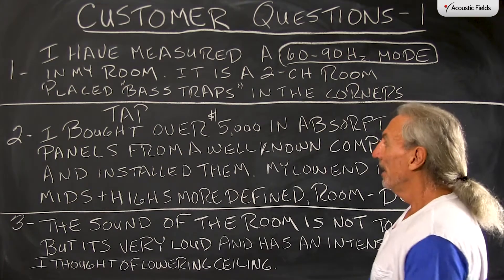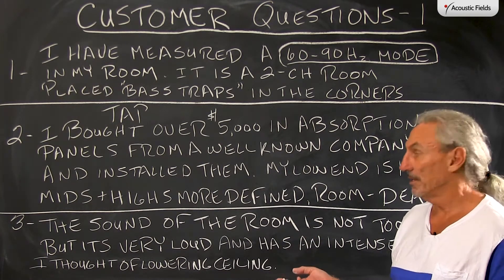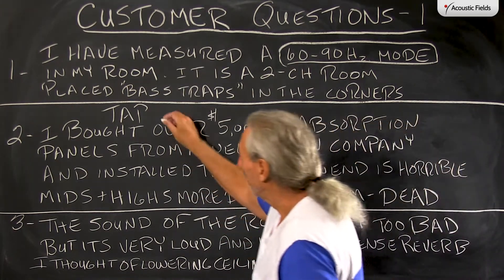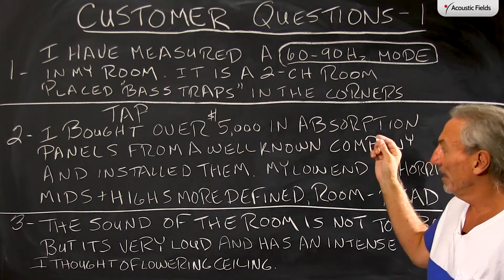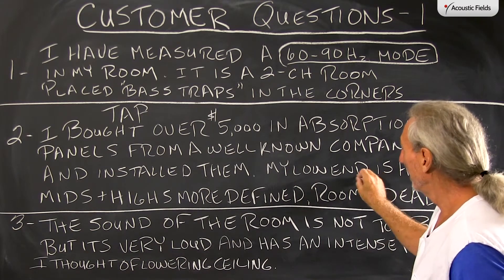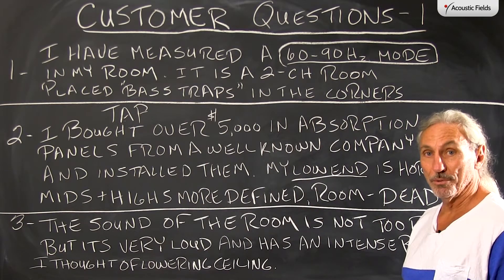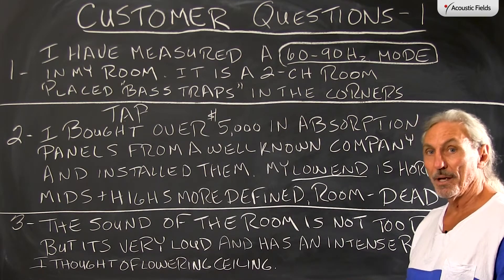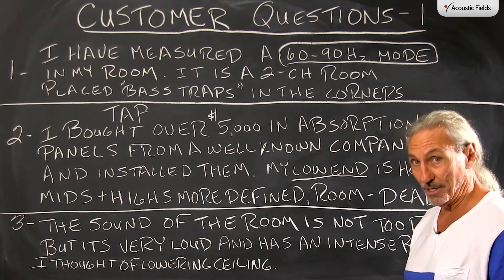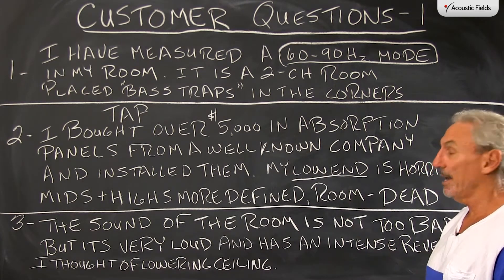Here's another one — we get this a lot. I bought over $5,000 in absorption panels from a well-known company and installed them. My low end is horrible, it's unchanged. Mids and highs are more defined, but the room is too dead. Again, type, amount, and position. He used sound-absorbing panels that are really designed for the mids and highs, and he didn't choose the right treatment type, the right amount, or the right position for the low end. I'm sure he was sold this by the company — they said put all of this stuff in and everything will be fine. He confirms mids and highs are more defined but the room is too dead, so he has too much, he doesn't have the right type, and it doesn't address the low end at all.